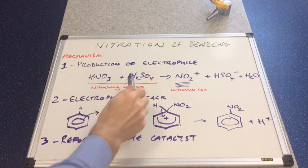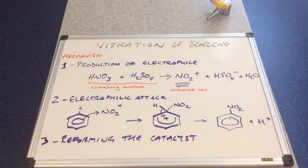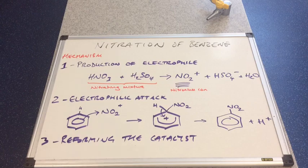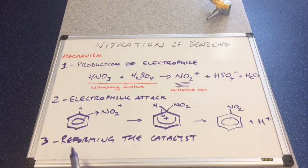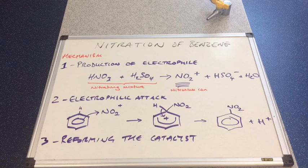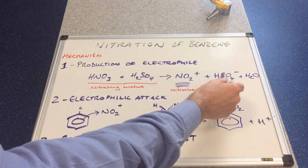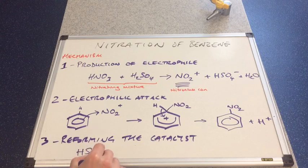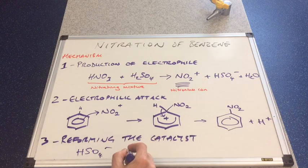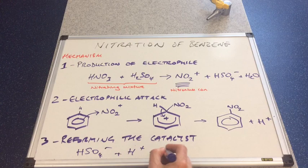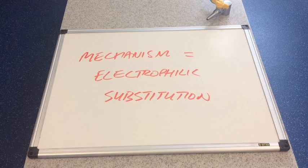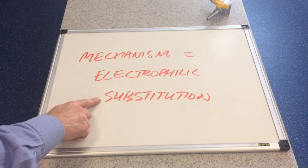If you remember, the sulfuric acid's role is as a catalyst. Catalysts need to be reformed, otherwise they're used up, and catalysts don't get used up. So we need to reform the catalyst. Hopefully you can see how we're going to do that. We've got an HSO4- ion here. We've got an H+ ion here. If you combine them, you get the H2SO4 back. Hopefully, now you've seen the mechanism, you will appreciate why it's known as electrophilic substitution.